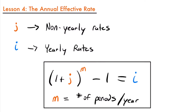Up until this point, we have primarily focused on yearly compound interest rates aside from one or two example problems. But in practice, interest might be credited more frequently than just one time each year.